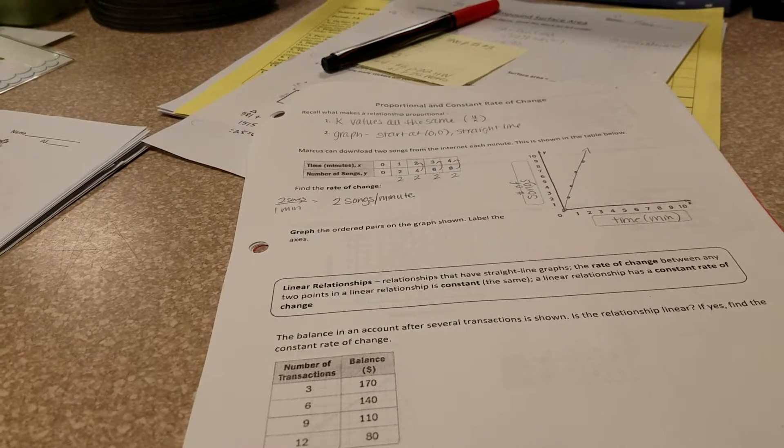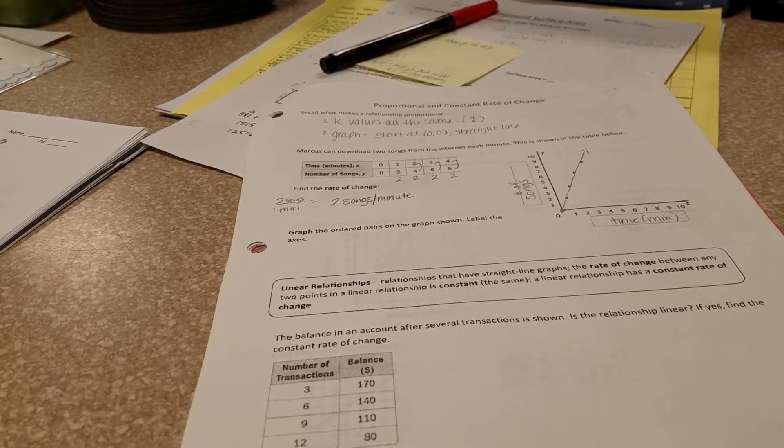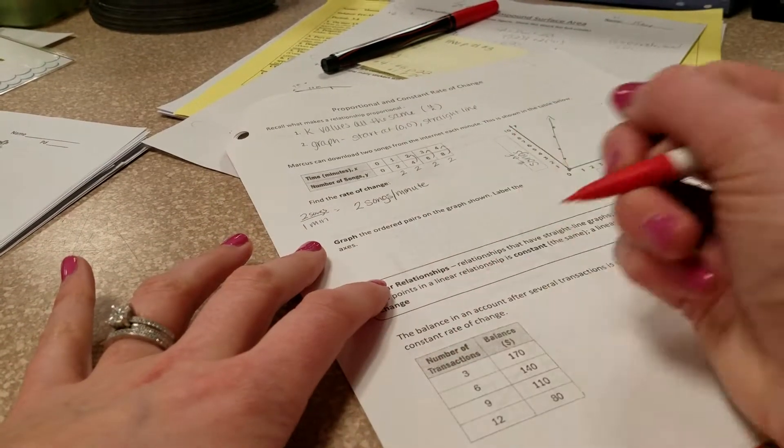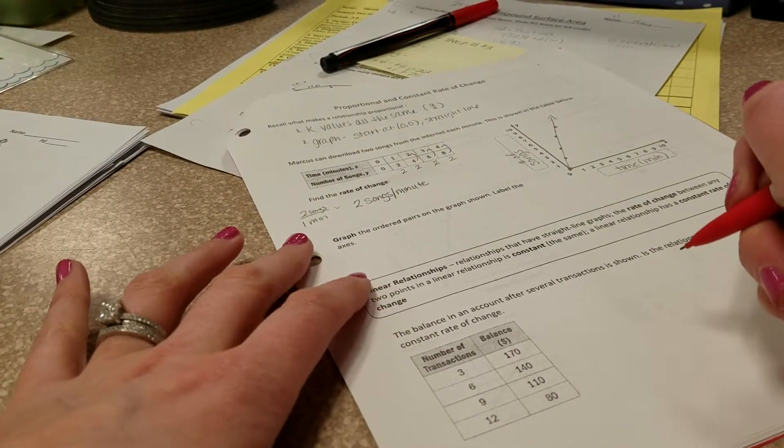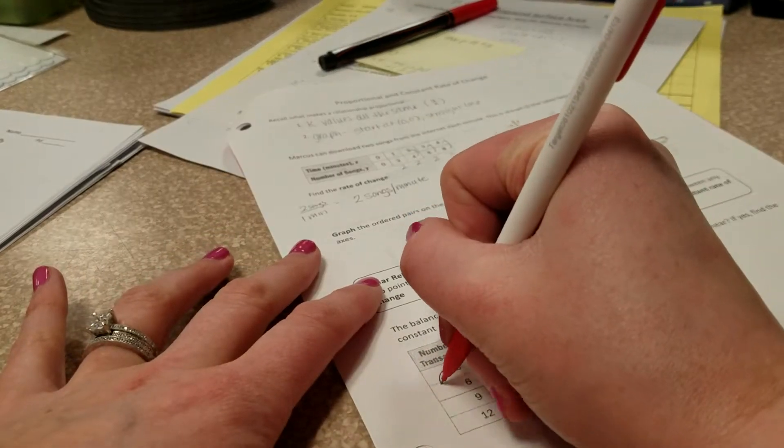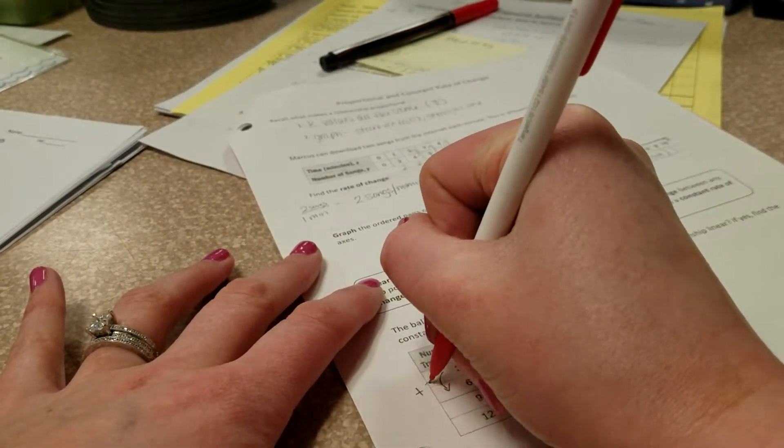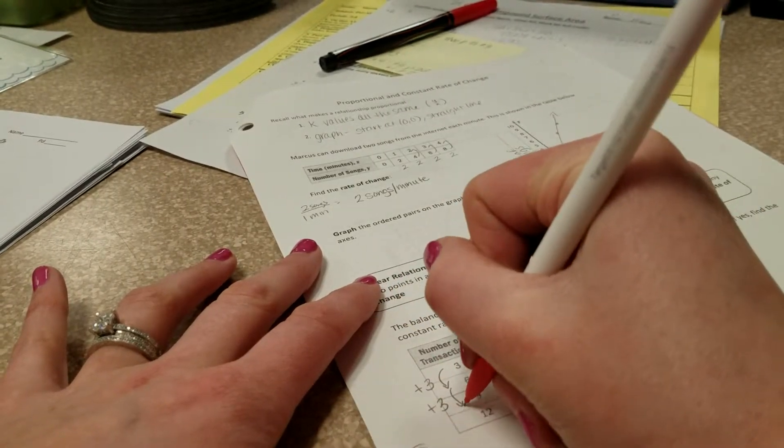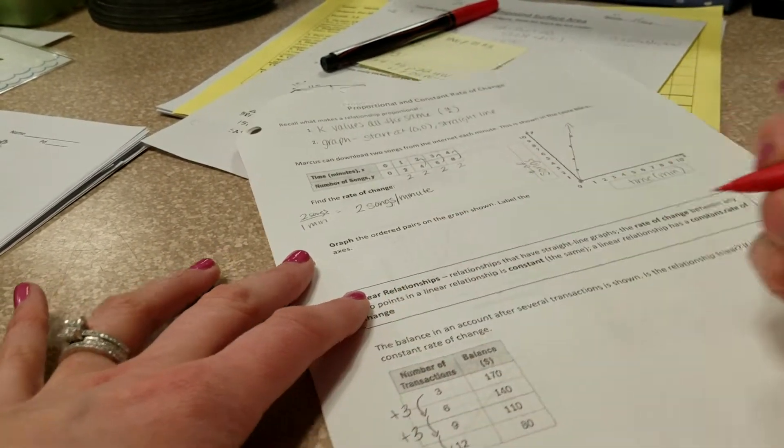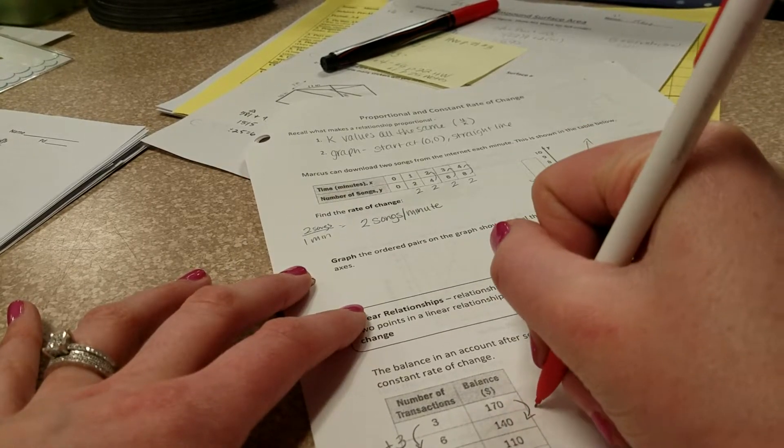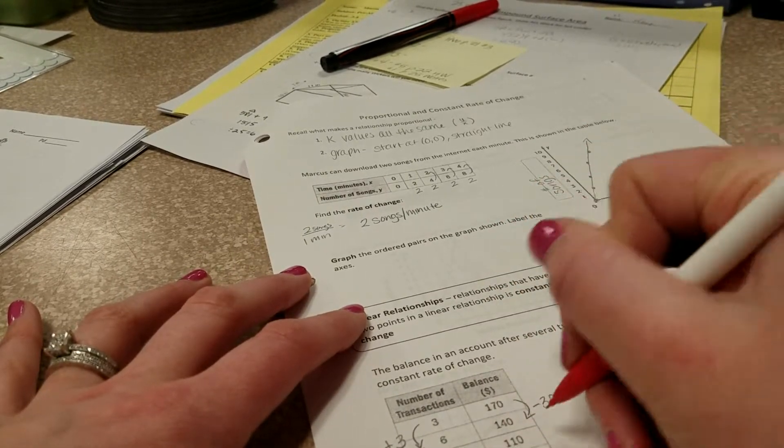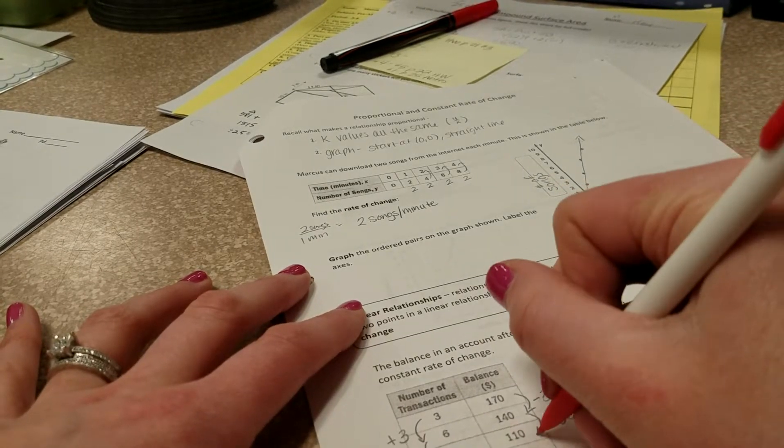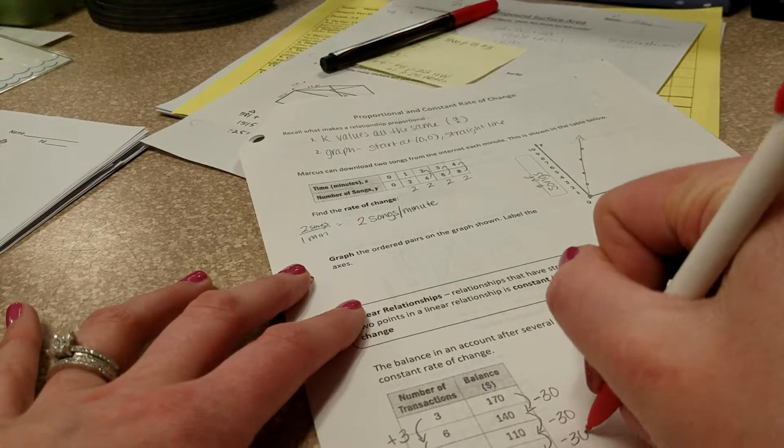The balance in the account after several transactions shown. Is the relationship linear? If yes, find the constant rate of change. So what we're doing here is we're actually finding the change now. We're not just doing y divided by x. So if I go from 3 to 6, that's a change of adding 3. 6 to 9 is a change of adding 3, and 9 to 12 is a change of adding 3. From 170 to 140, that's a decrease of 30. 140 to 110 is a decrease of 30, and 110 to 80 is a decrease of 30.